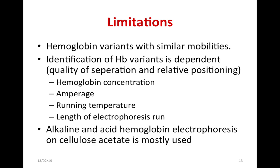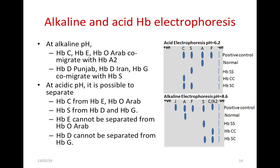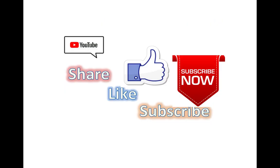Many labs use alkaline electrophoresis, but some also use acid hemoglobin electrophoresis on cellulose acetate. In alkaline electrophoresis (as discussed), the normal HbA band moves faster than the sickle HbS band. In acid electrophoresis at pH 6.2, the pattern reverses — the sickle band moves faster than the normal band. With this comparison, I have concluded my presentation. If you like this video, please share, like, and subscribe. Thank you.